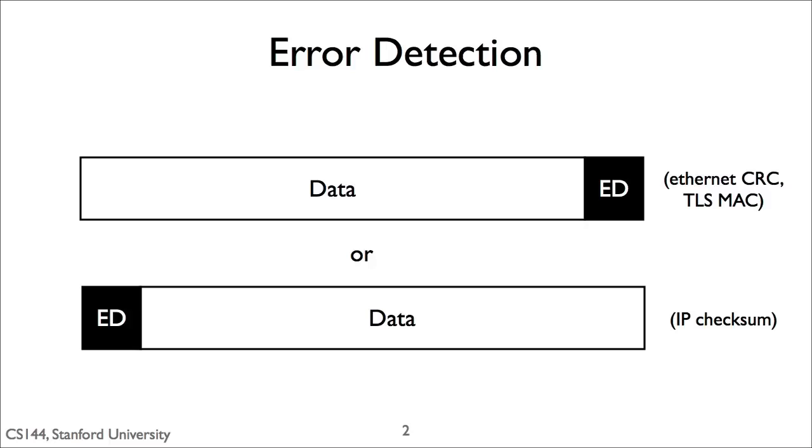TLS and Ethernet have a footer — protocol information which follows the payload — which is where they put the CRC and MAC.